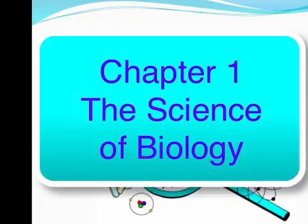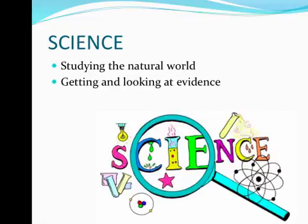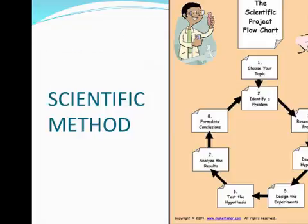If I asked you to define it, it might be hard for you to define. Science is really studying anything in nature. It's getting and looking at evidence. When doing science, it must be done in an orderly way. The scientific method is that orderly way to conduct an investigation.